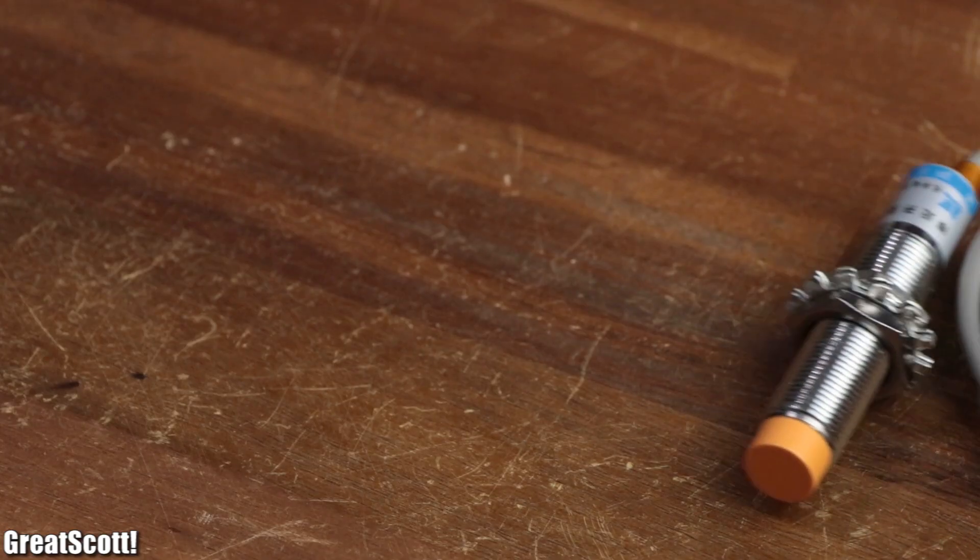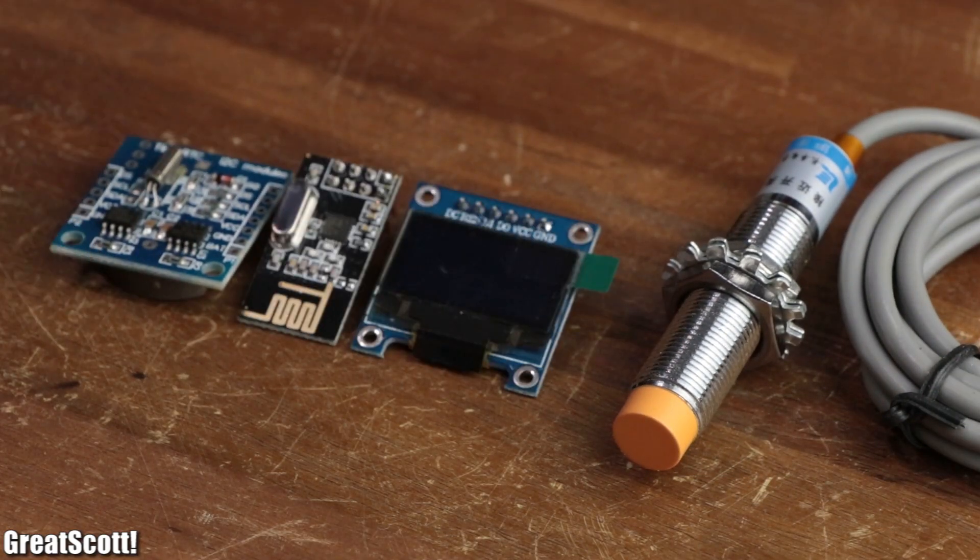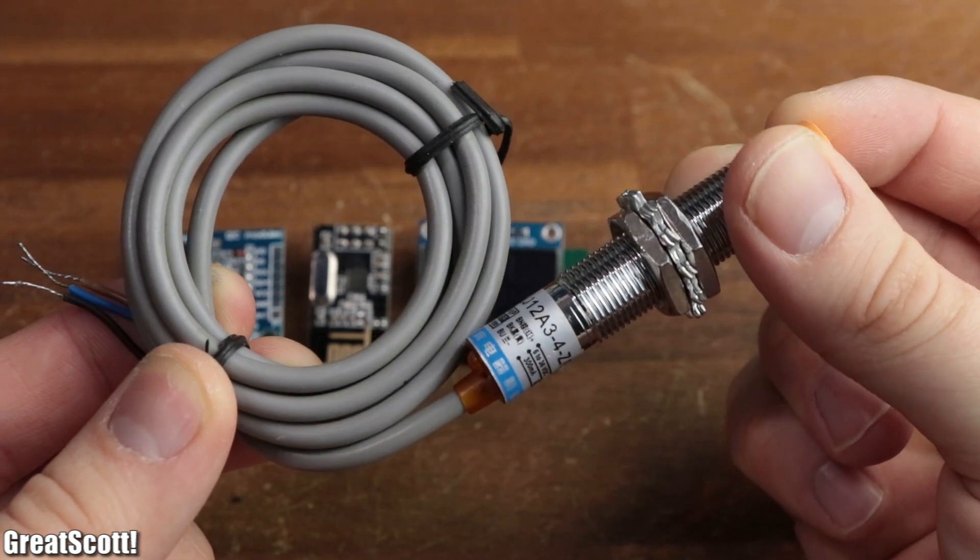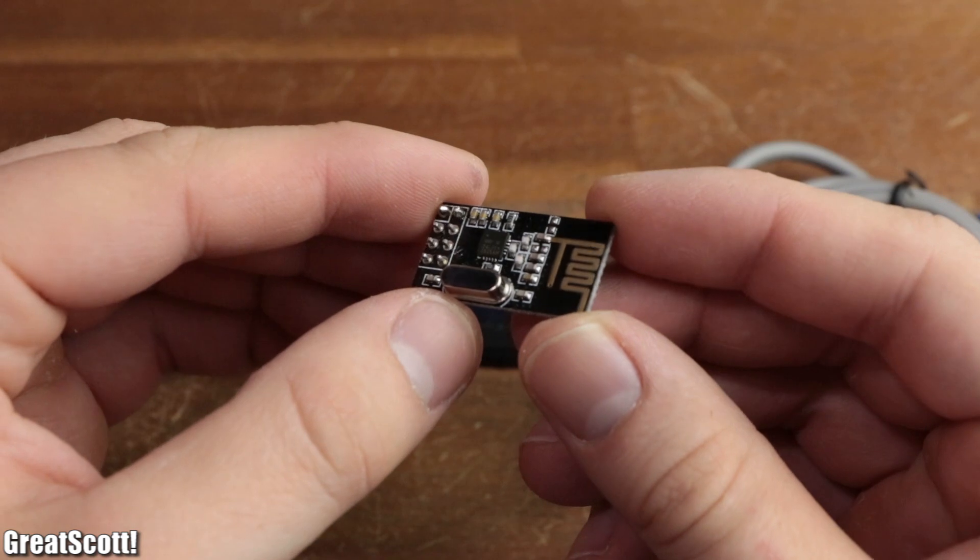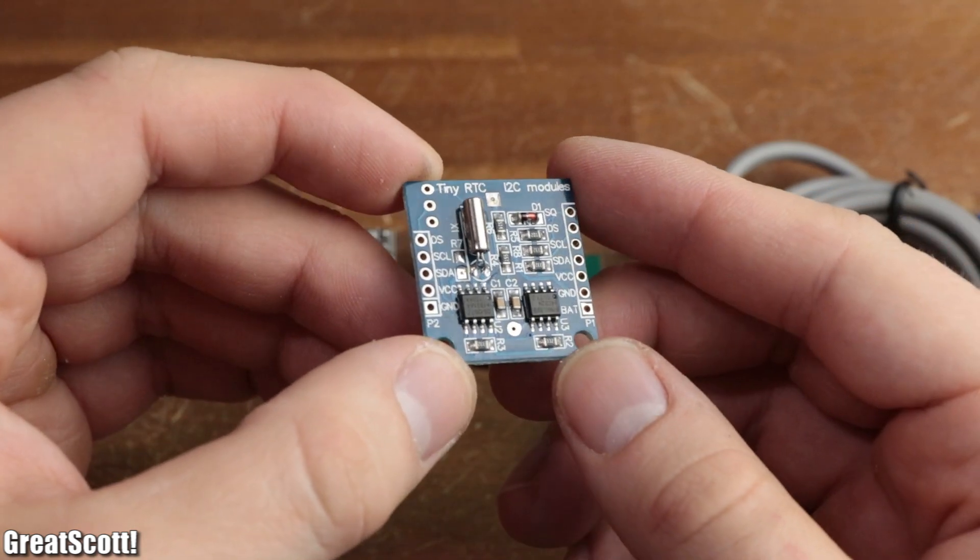But now you want to attach external components to your Arduino like an inductive proximity sensor, an OLED display, an RF communication IC, or for example a real-time clock.